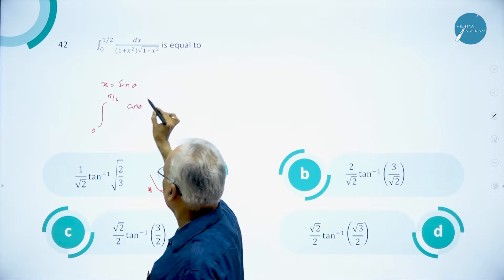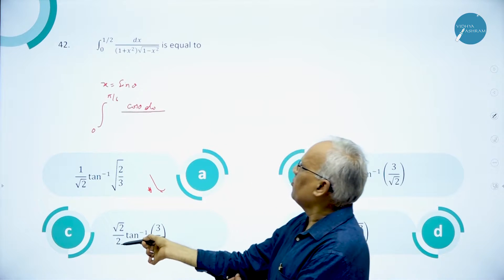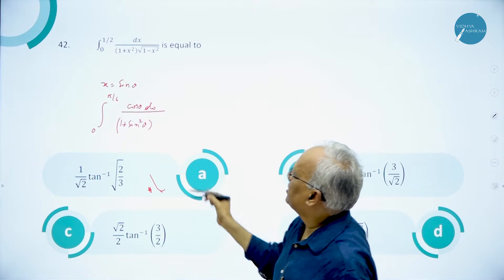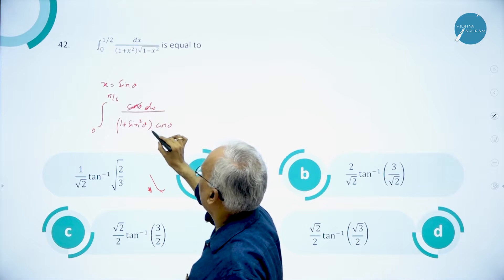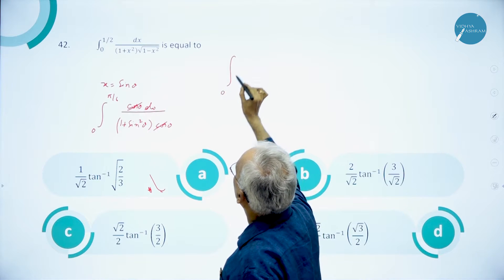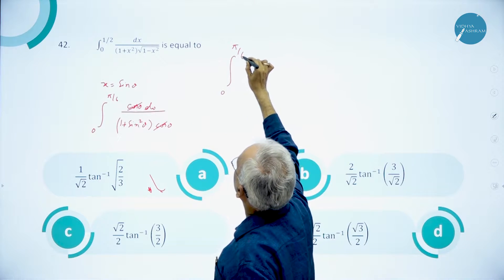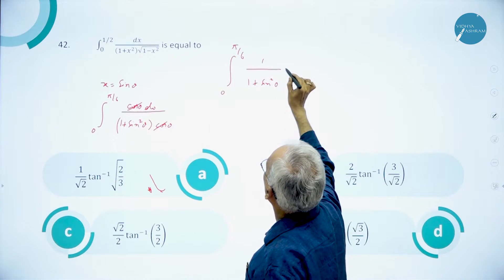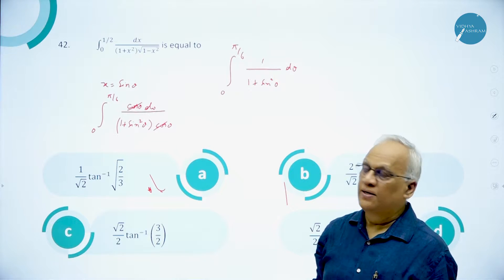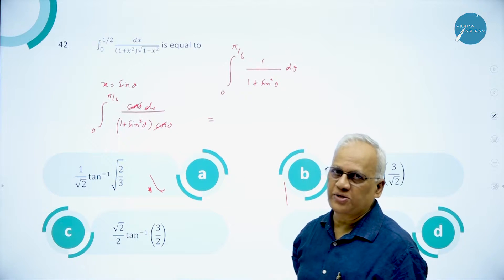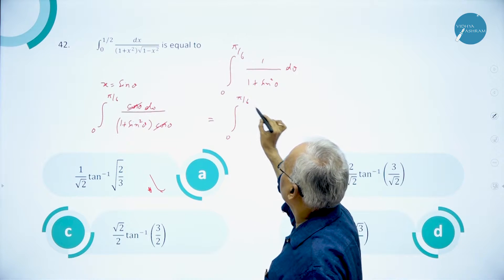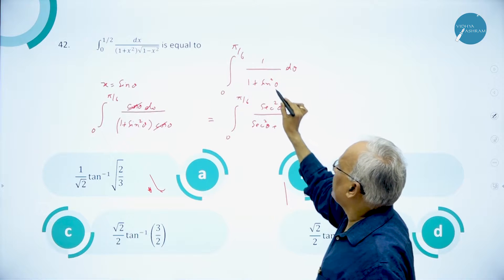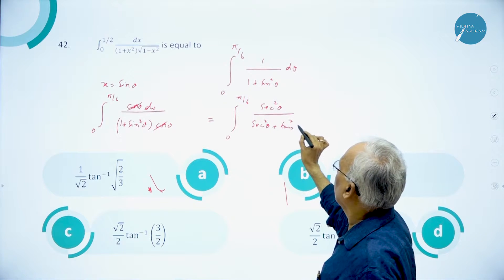Divided by 1+x² = 1+sin²θ, and √(1-sin²θ) = cosθ. That cosθ cancels with cosθ in the numerator. So this integral becomes the integral from 0 to π/6 of 1/(1+sin²θ) dθ. When you have a second degree in sine or cosine, you can reduce it to standard form by dividing numerator and denominator by cos²θ.